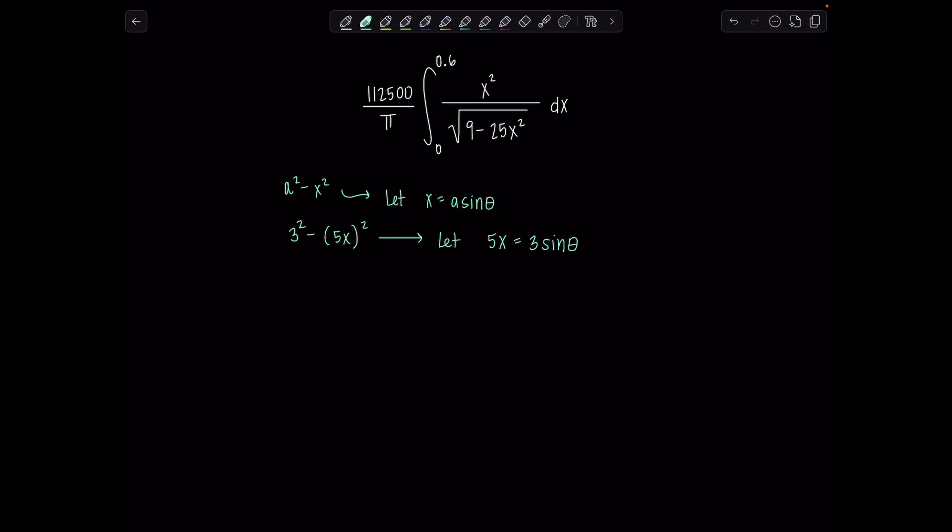From here, you could differentiate both sides. I'm just going to divide by 5. So x is 3 fifths sine theta, and then dx is 3 fifths cosine theta d theta.